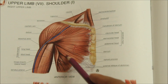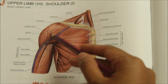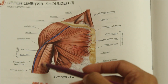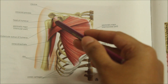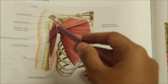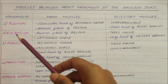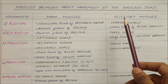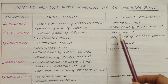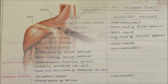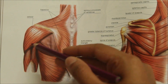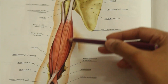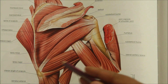This is the pectoralis major. This is the deltoid. This is the short head of the biceps brachii. This is the coracobrachialis muscle. The main muscles involved in extension include the posterior fibers of the deltoid and the latissimus dorsi; accessory muscles include the teres major and the long head of the triceps brachii.